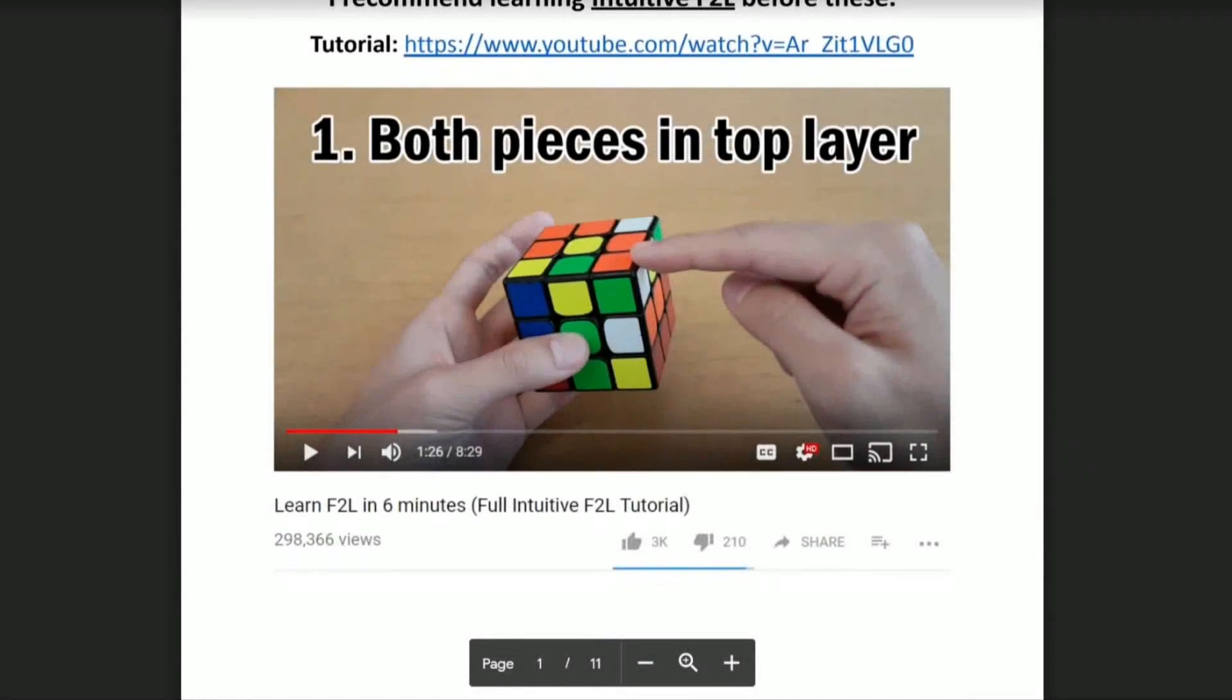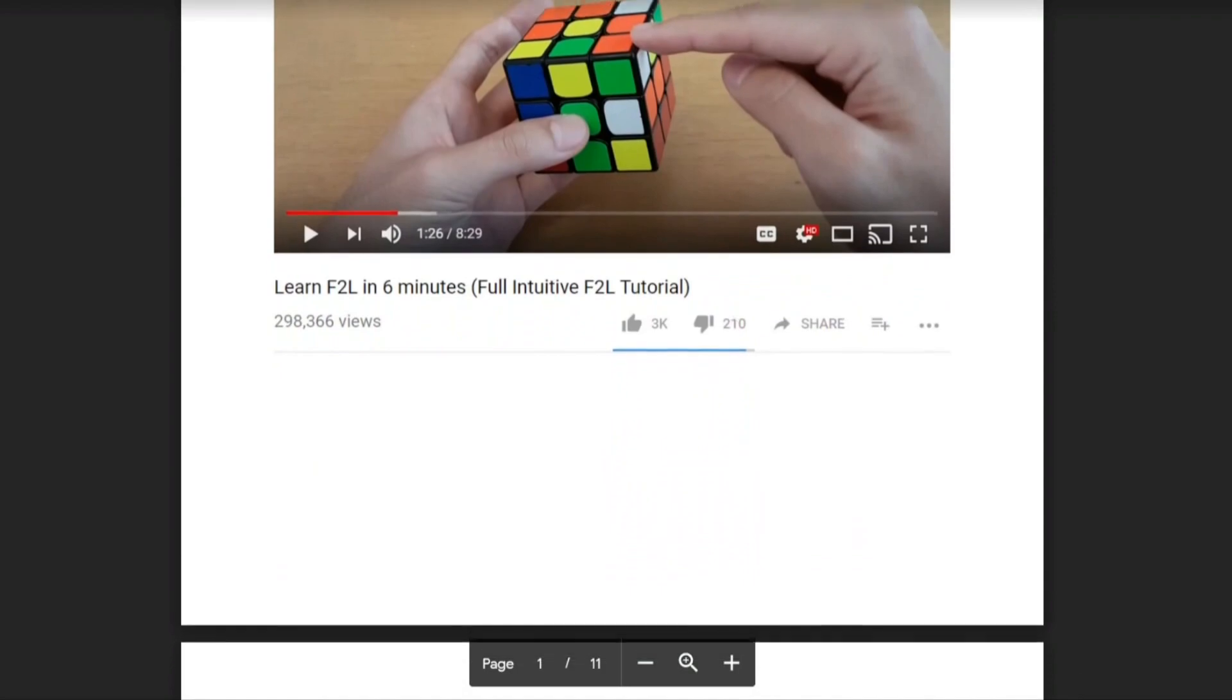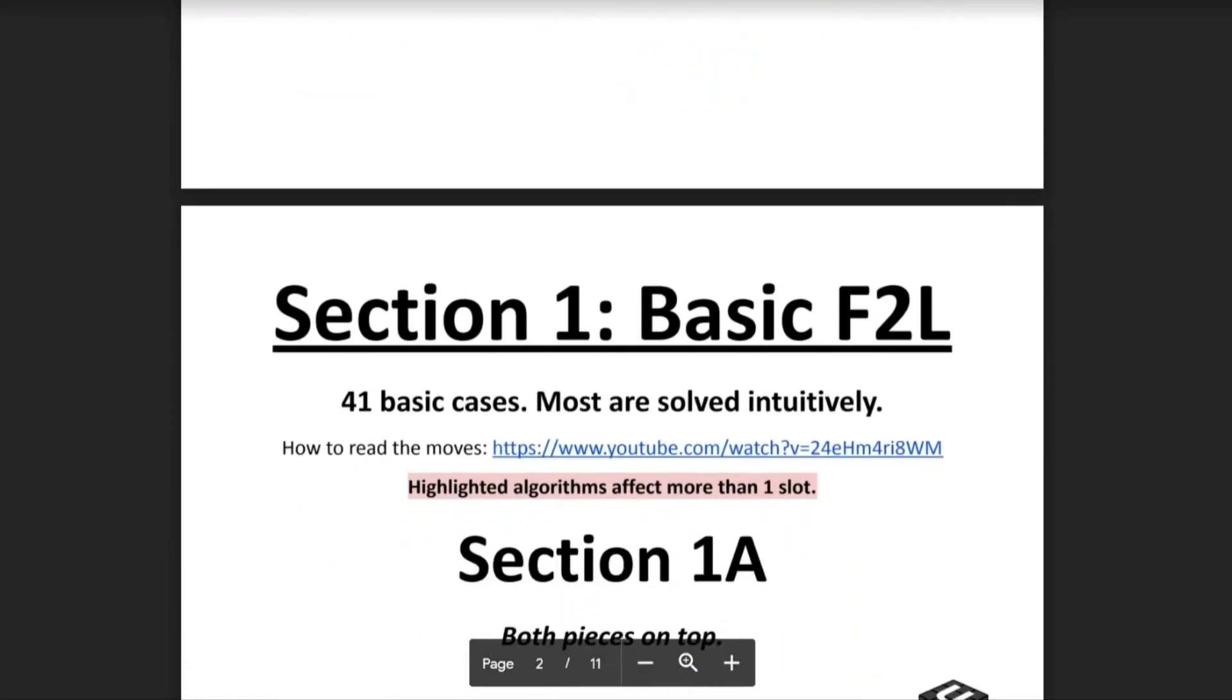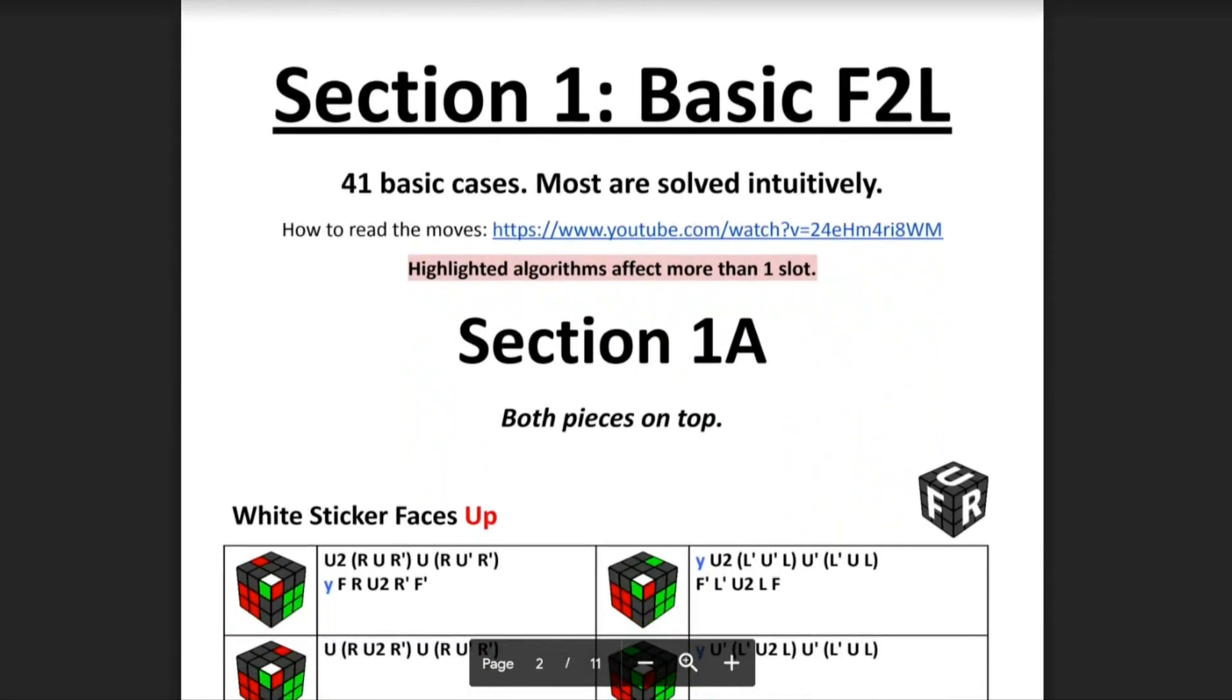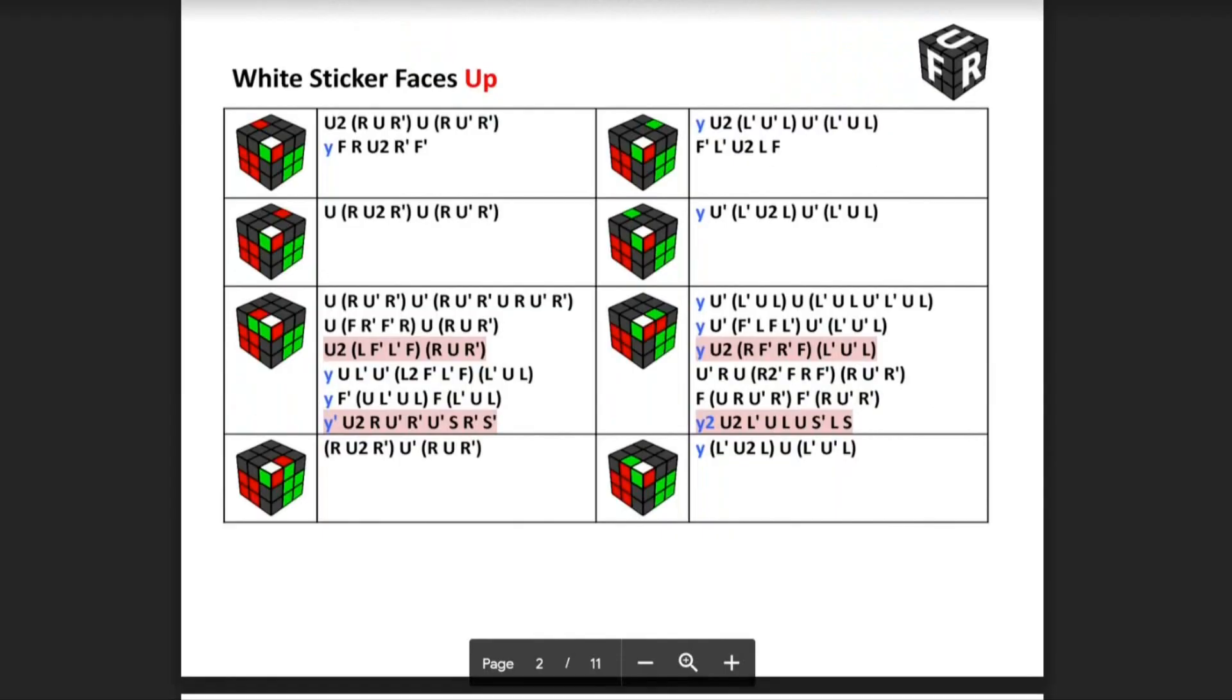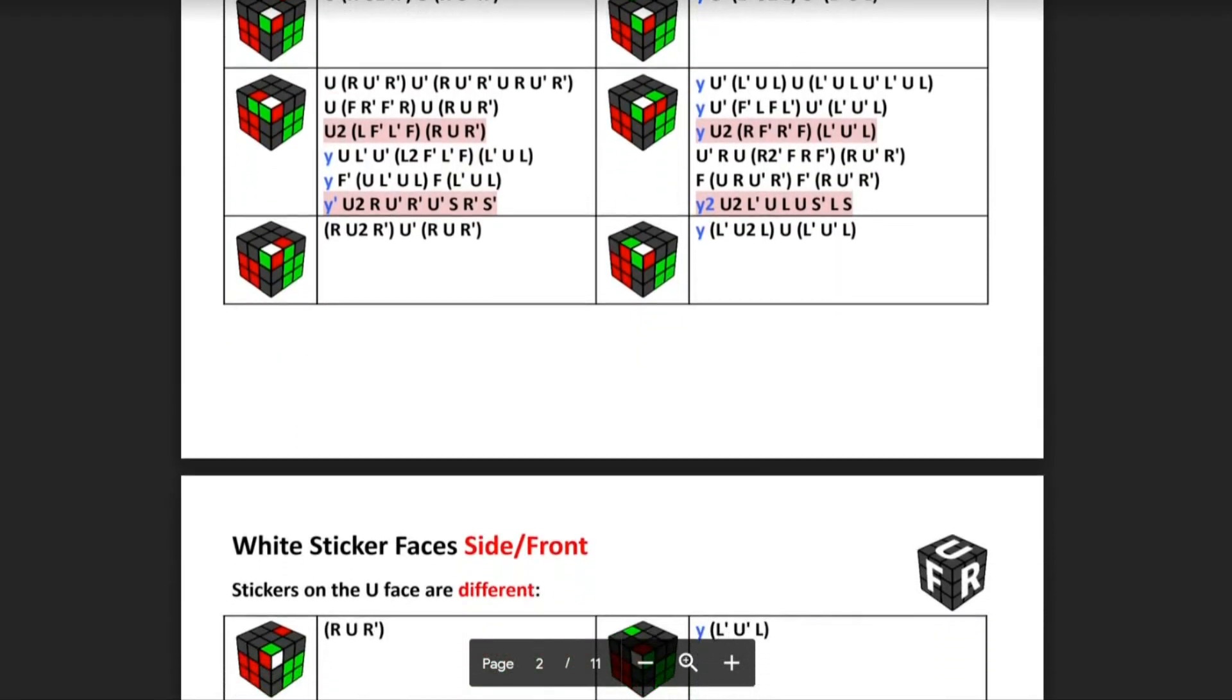So there will be a link in the description to the F2L PDF. The sheet is broken down into three big sections. The first section is basic F2L, and to save space, I don't always include mirrors here, but you should be able to mirror any of these algorithms between the front and the back. This won't always be true, but it will be true for algs that use U, L, and R only.